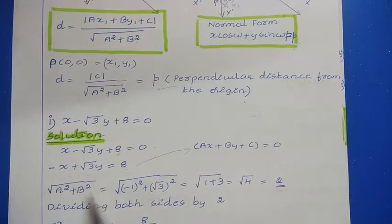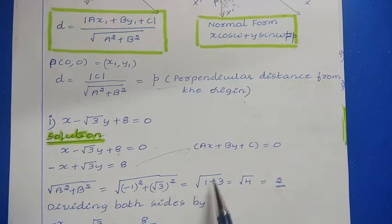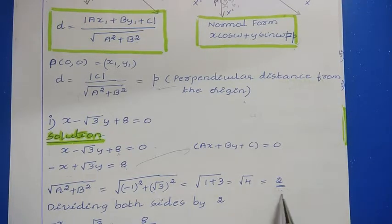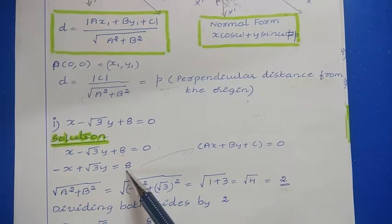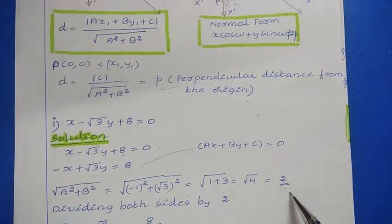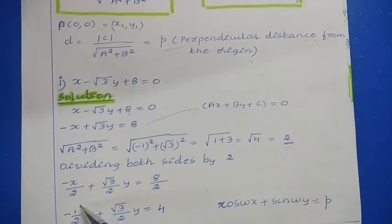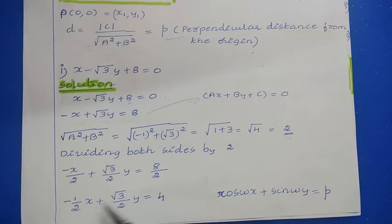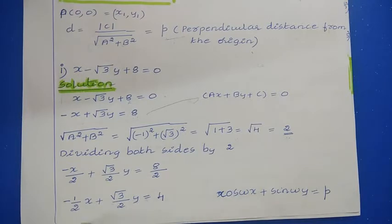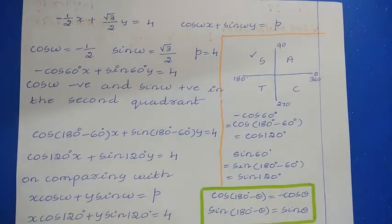Now calculate square root of a squared plus b squared: square root of (−1)² plus (√3)² equals square root of 1 plus 3 equals square root of 4 equals 2. The p value is modulus of c divided by this: c is 8, divide by 2 gives 4. So divide both sides by 2: minus x divided by 2 plus square root of 3 divided by 2 into y equals 8 divided by 2 equals 4. So p equals 4, the perpendicular distance from the origin.